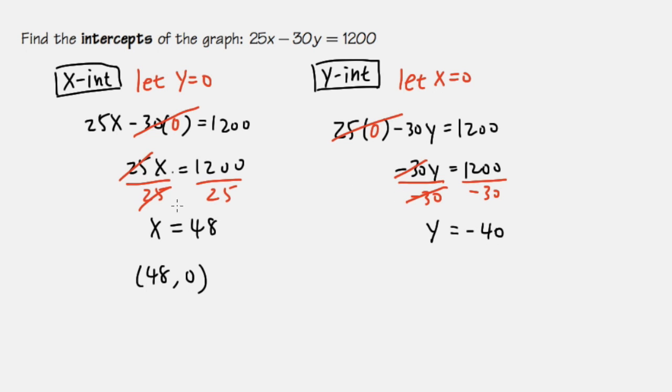And just like the x intercept, the y intercept is also a point. We know the x value is 0, so we write it down first. And the y value is negative 40. So 0, negative 40. This is the y intercept, and this was the x intercept. This is the answer.